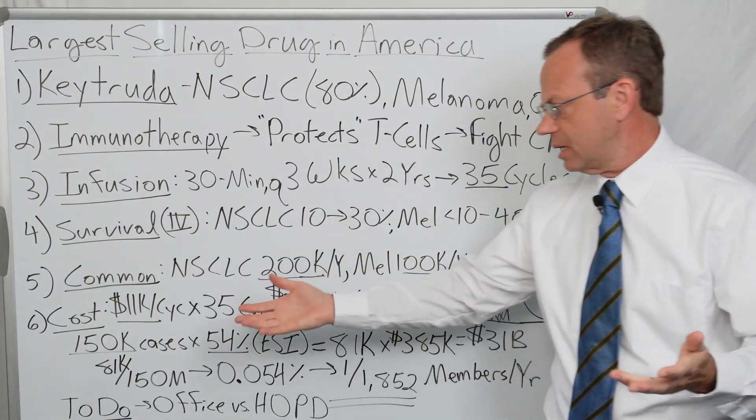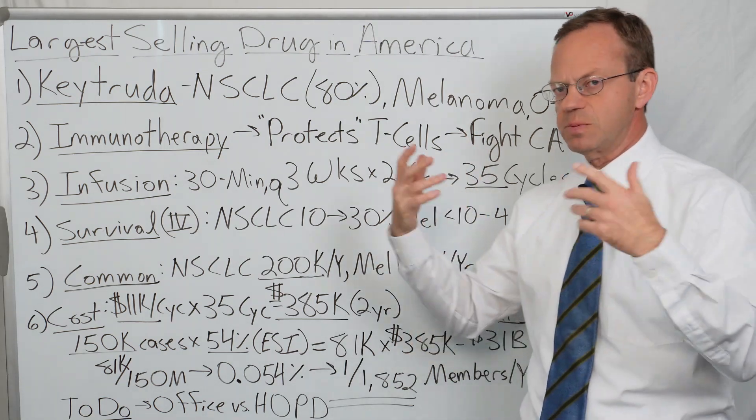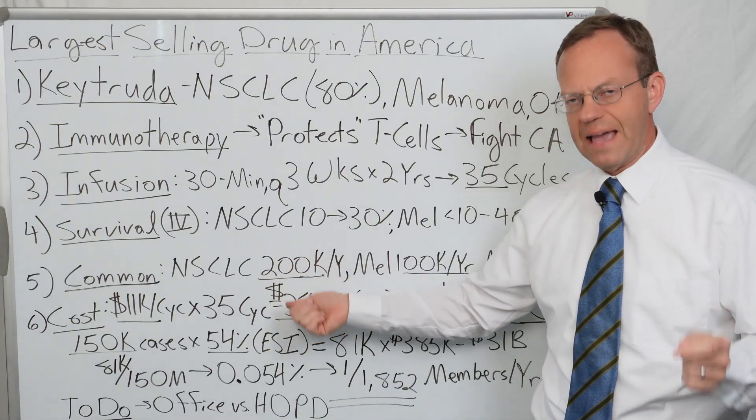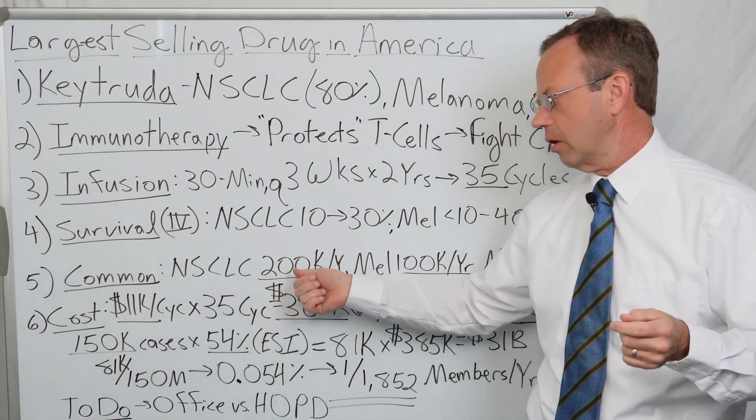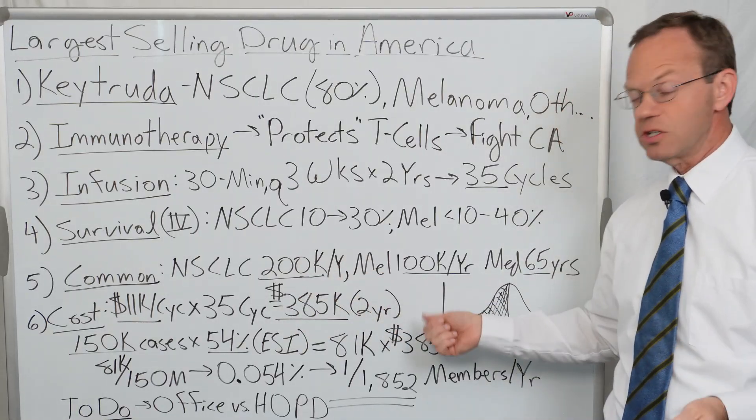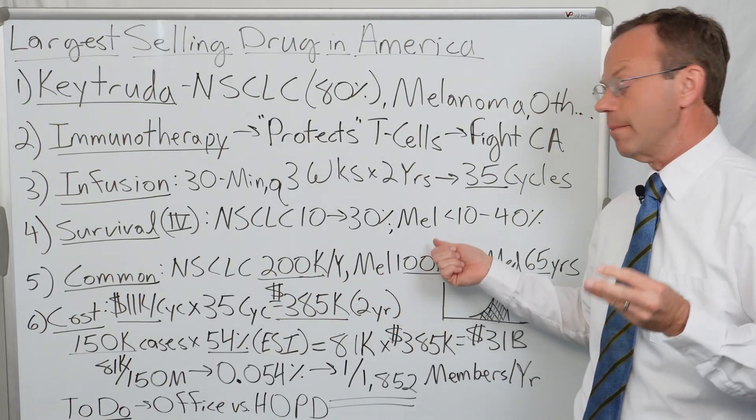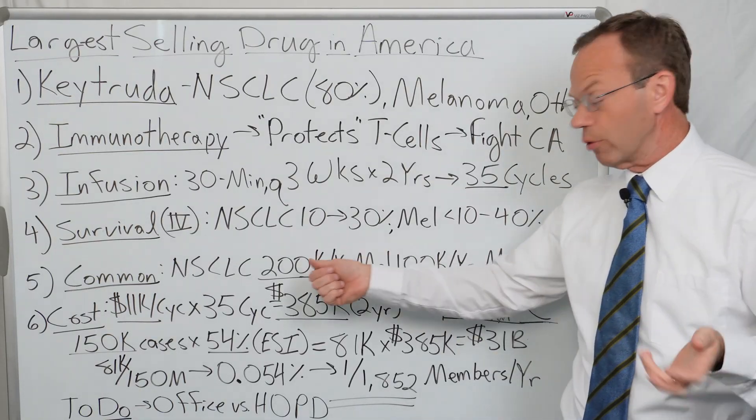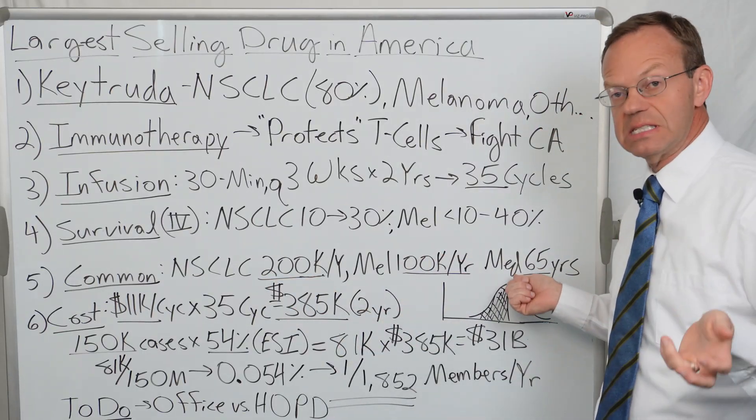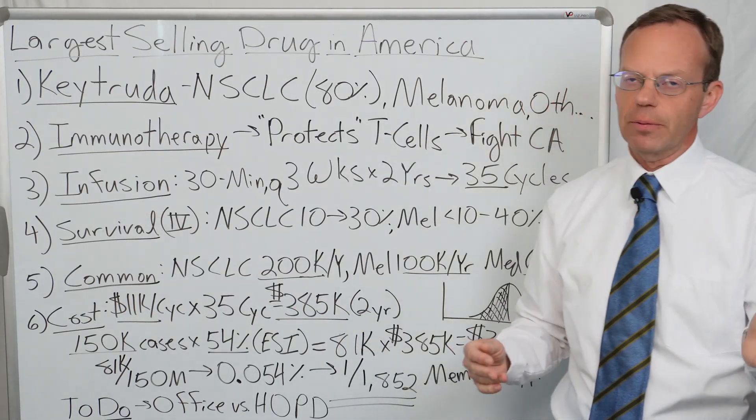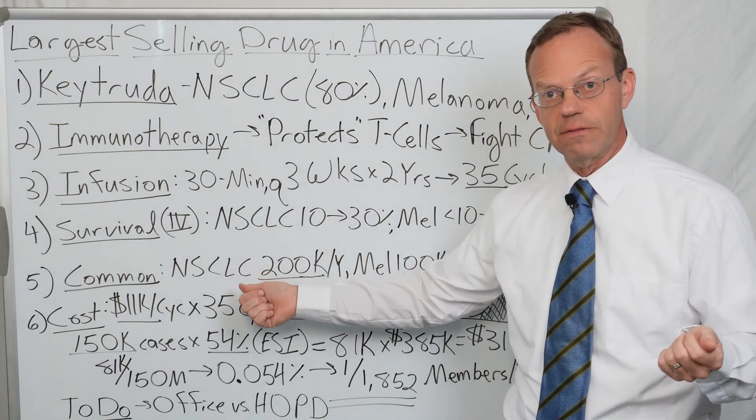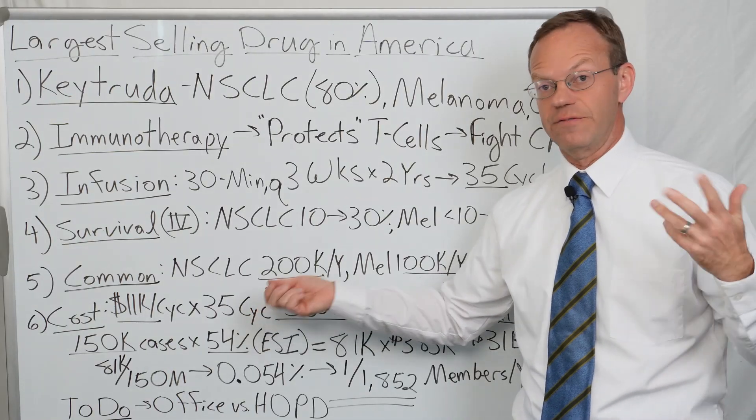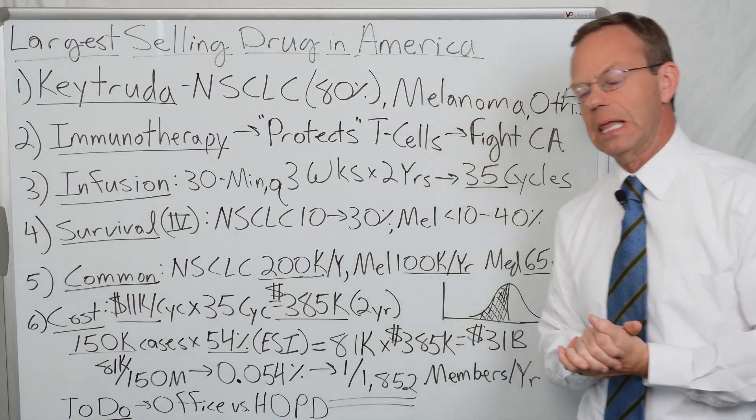How common are non-small cell lung cancer and melanoma? There's about 200,000 new cases of non-small cell lung cancer every year and about 100,000 new cases of melanoma every year. The median age that people get both is about 65. The biggest risk factor for non-small cell lung cancer is smoking - upwards of 80 to 90% of all lung cancers are found in smokers.